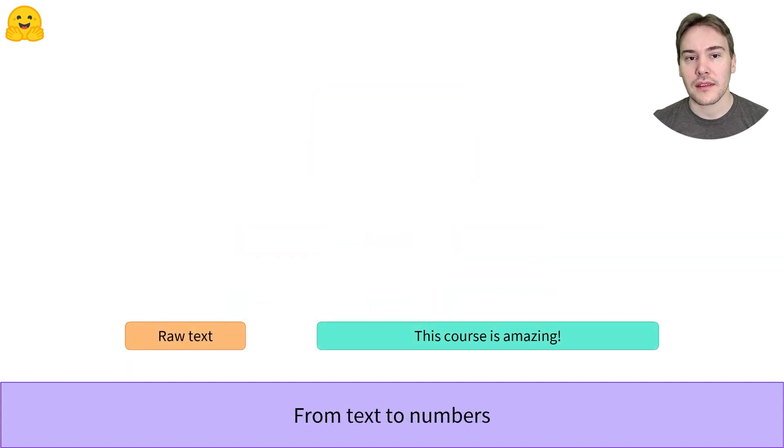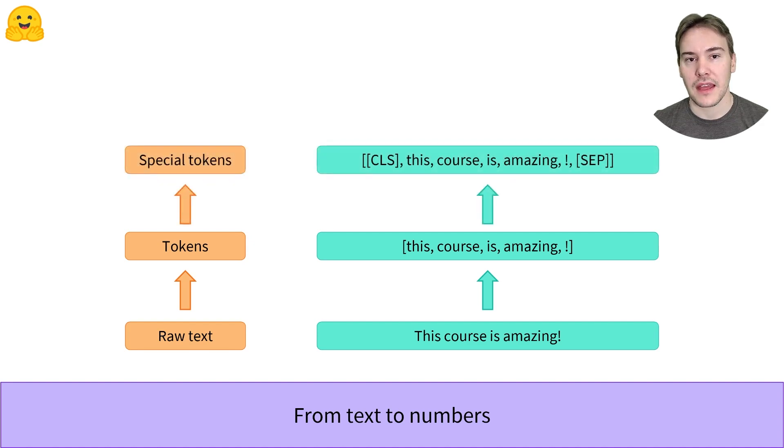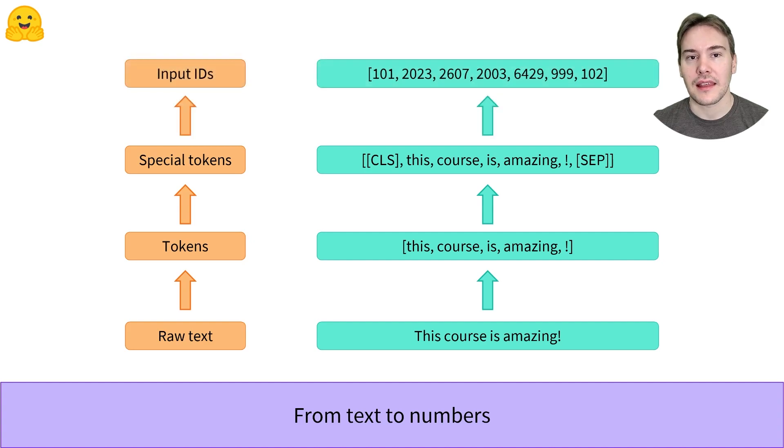The tokenization process has several steps. First, the text is split into small chunks called tokens. They can be words, parts of words, or punctuation symbols. Then, the tokenizer will add some special tokens if the model expects them. Here, the model used expects a CLS token at the beginning and a SEP token at the end of the sentence to classify. Lastly, the tokenizer matches each token to its unique ID in the vocabulary of the pretrained model.